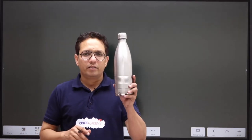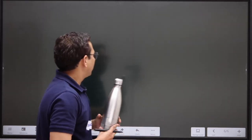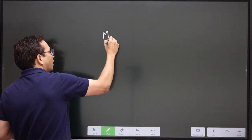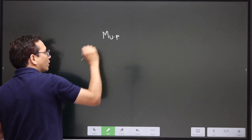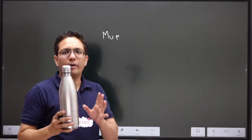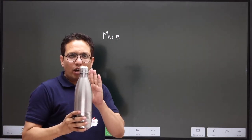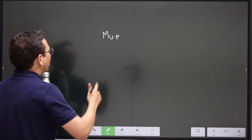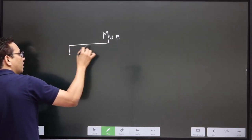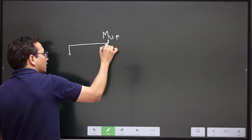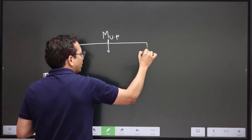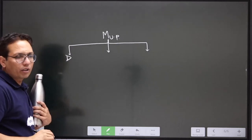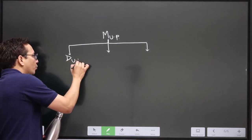Suppose this flask is manufactured in UP. If I am the manufacturer, I am manufacturing this because I have to sell it. So in that case, I can sell it to a distributor. This distributor, he can be in UP itself.